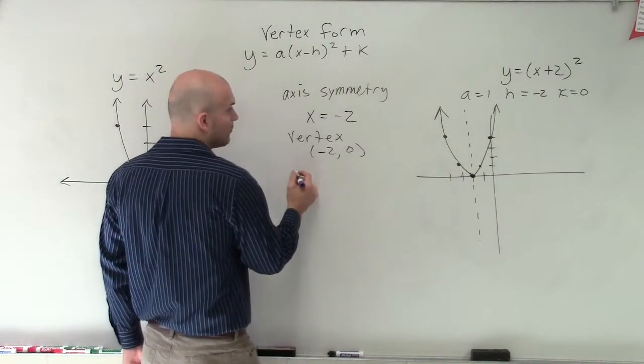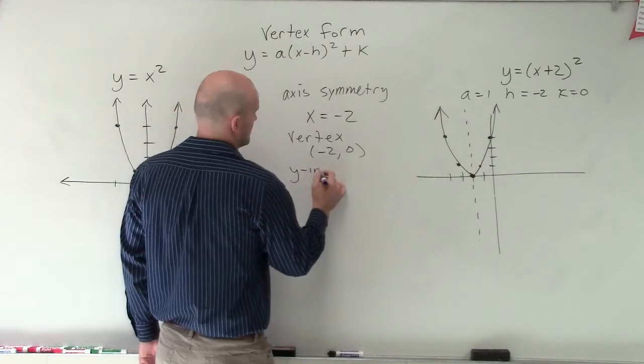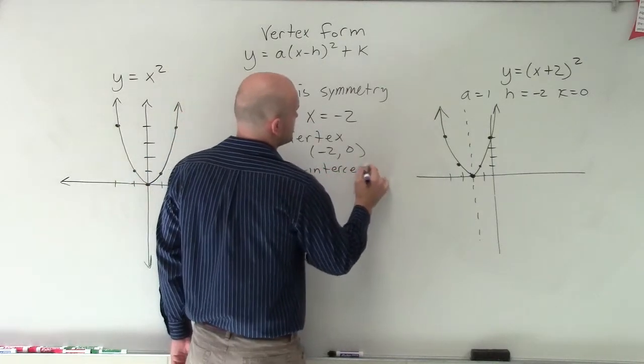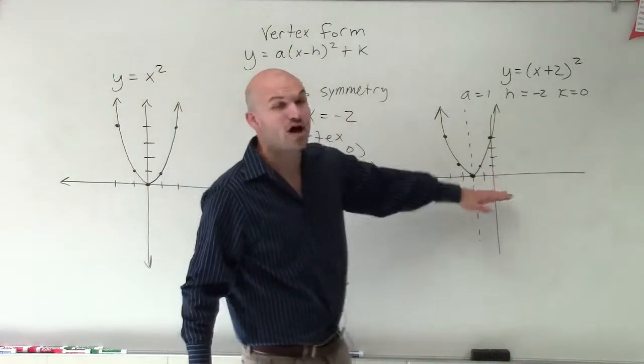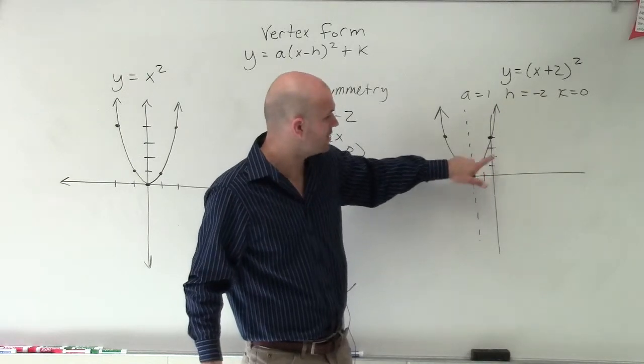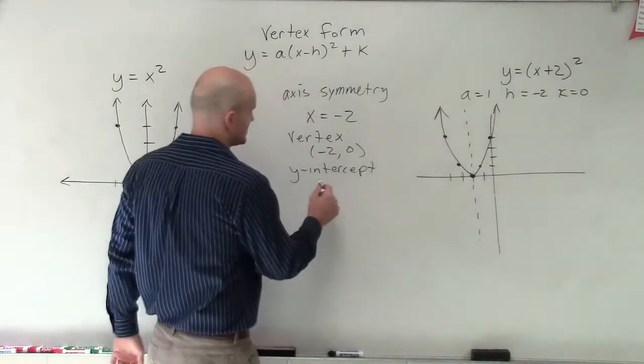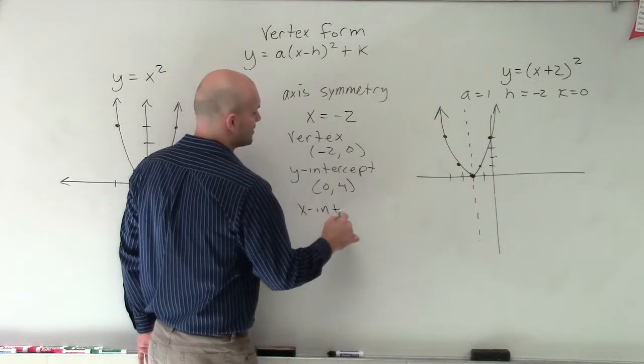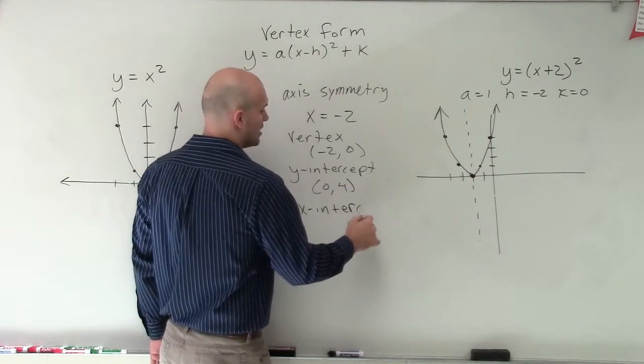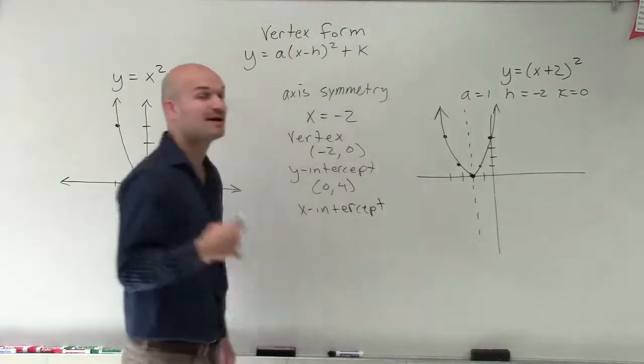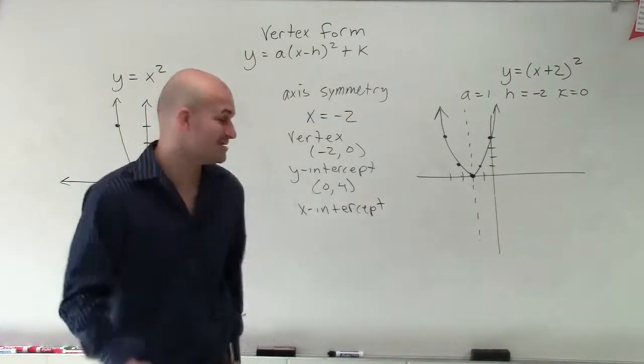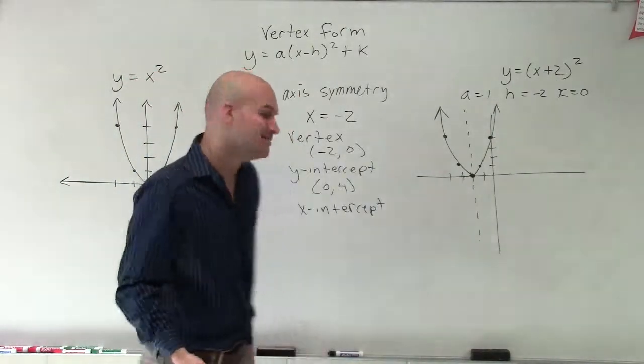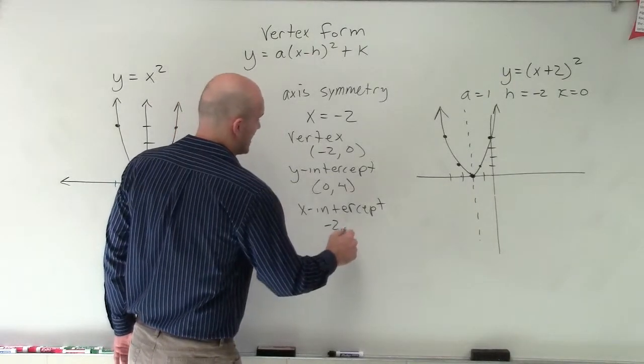And let's take a look at my y-intercept. So you can see my y-intercept is where my graph crosses the y-axis, which is at 0 comma 4. And then my x-intercept is where my graph crosses my x-axis. But my graph actually does not cross the x-axis, it's actually just going to touch it at the point negative 2 comma 0.